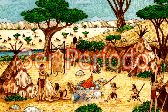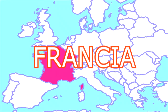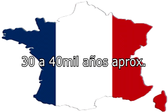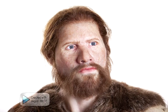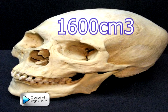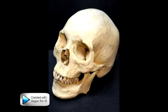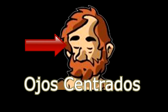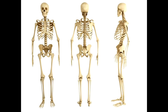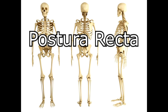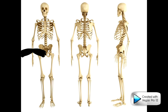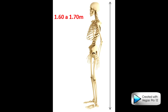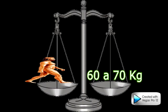El paleolítico superior es el tercero y último de los periodos de la etapa paleolítica. Se inició en Francia hace 30 mil a 40 mil años aproximadamente y se caracterizó por el nuevo humano denominado Homo sapiens, quien tuvo un cráneo de 1.600 centímetros cúbicos, una frente más amplia con una mandíbula corta, dientes pequeños y una barbilla en forma de V. Sus ojos fueron más centrados y las cejas menos pronunciadas. Su postura fue completamente recta y tuvo vello corporal solo en la pelvis, cabeza y axilas.